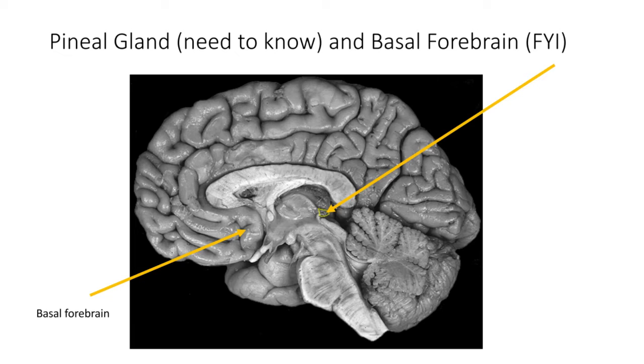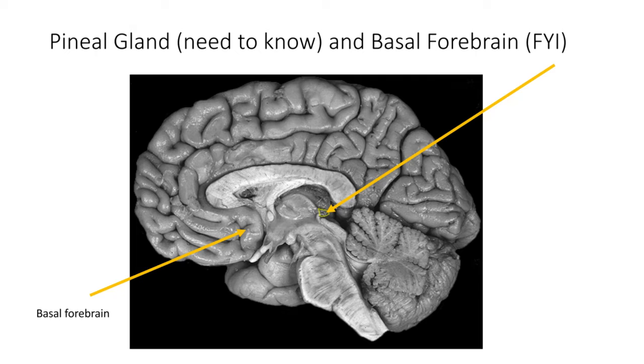And then the pineal gland, this isn't a very good image, but it's right there just behind where the thalamus would be. And this is a mid-sagittal cut, sagittal slice. And it's kind of shriveled in this picture, but that's where it'd be, that yellow outline. That's where the pineal gland is.